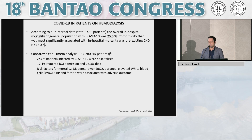Our data were similar to much larger multicentric studies of more than 330,000 patients on chronic hemodialysis. In those studies, risk factors for mortality were diabetes, hypoxemia, dyspnea, elevated white blood cells, CRP, and ferritin, which were associated with adverse outcomes.